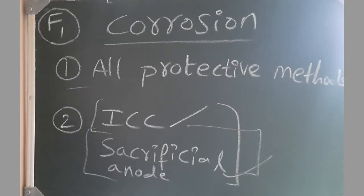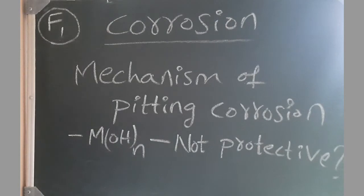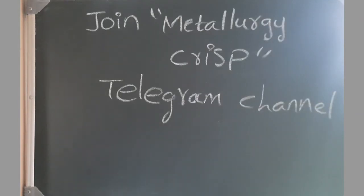After that, mechanism of pitting corrosion. While explaining there were a lot of cross questions. What is the anodic and cathodic reactions during pitting corrosion? How it is different from that uniform corrosion? And the next question is, the metal hydroxide which is forming as the corrosion product in the pitting corrosion, is it not protective?